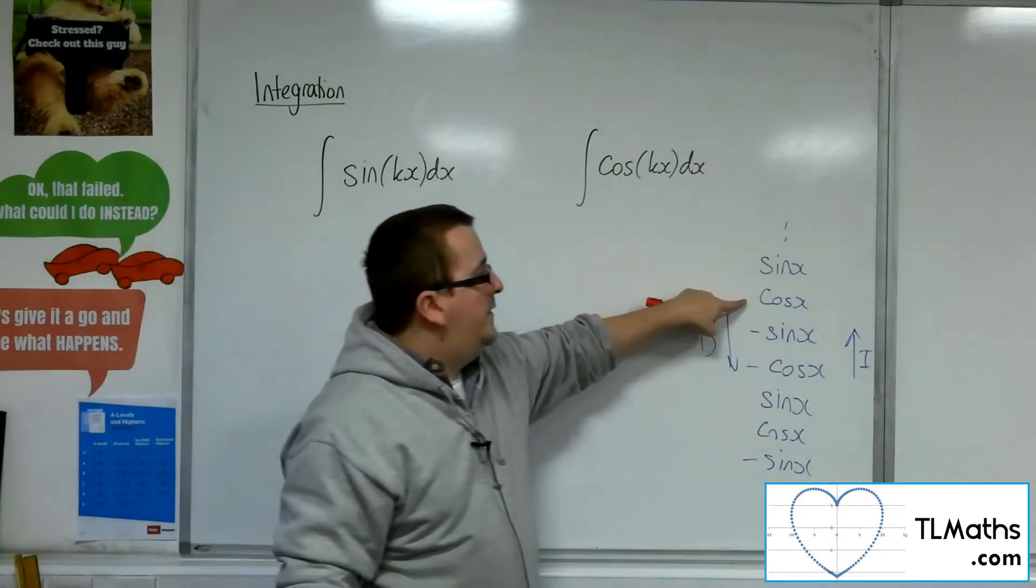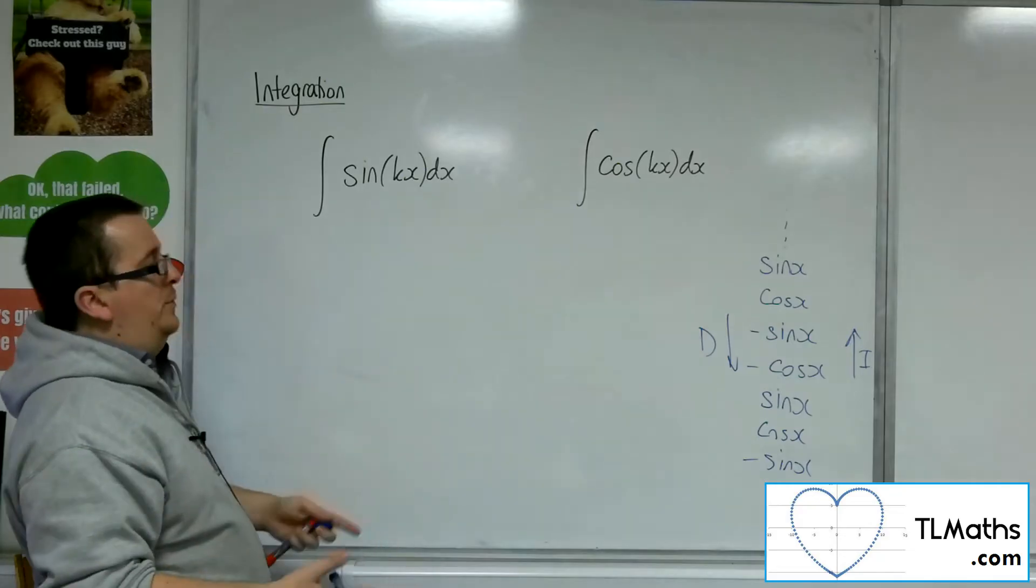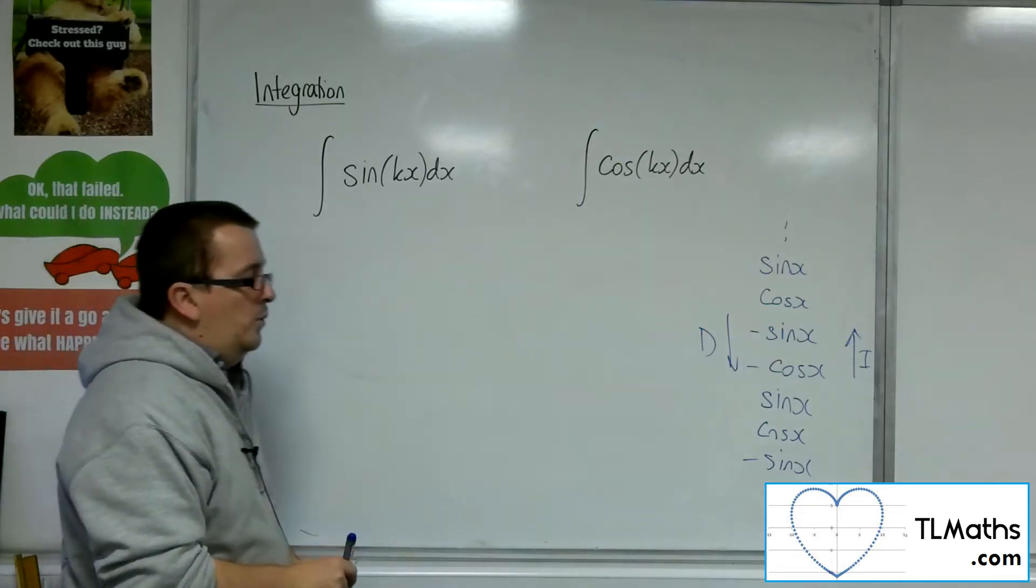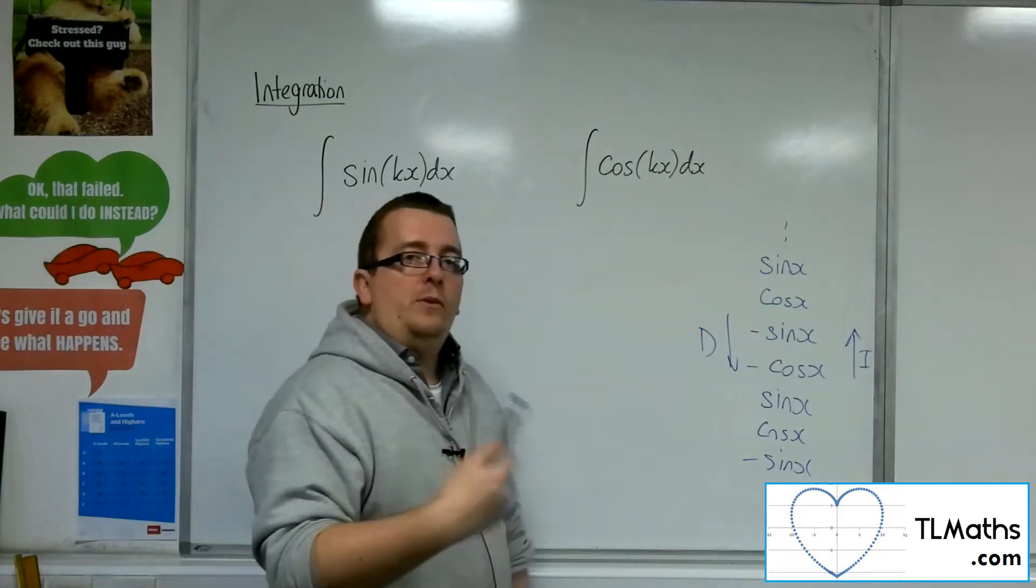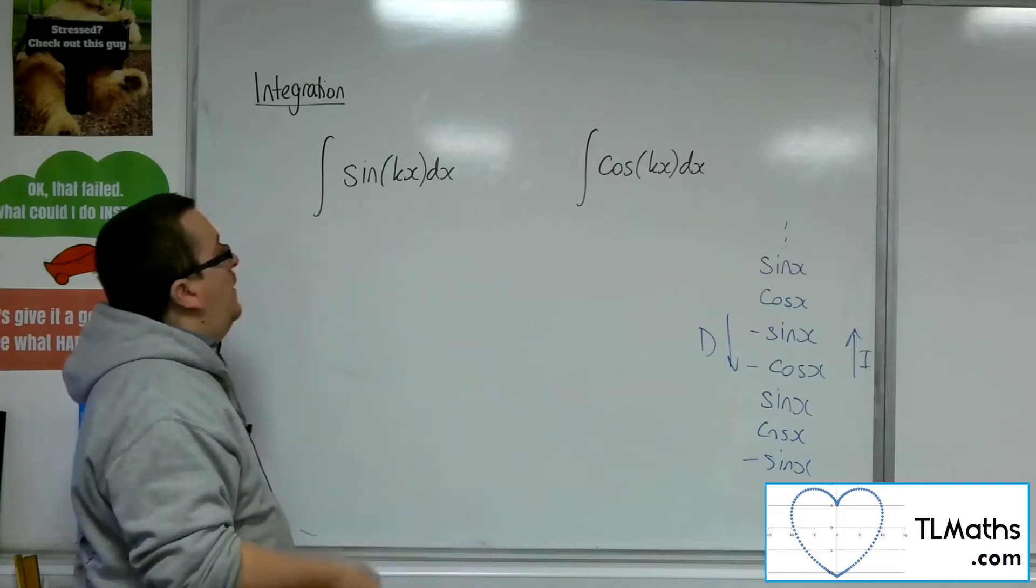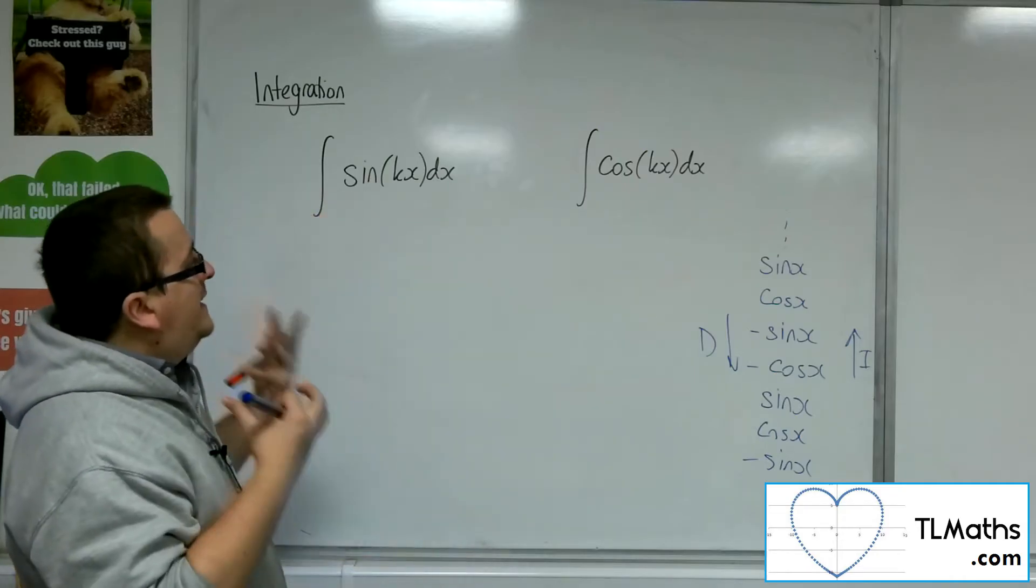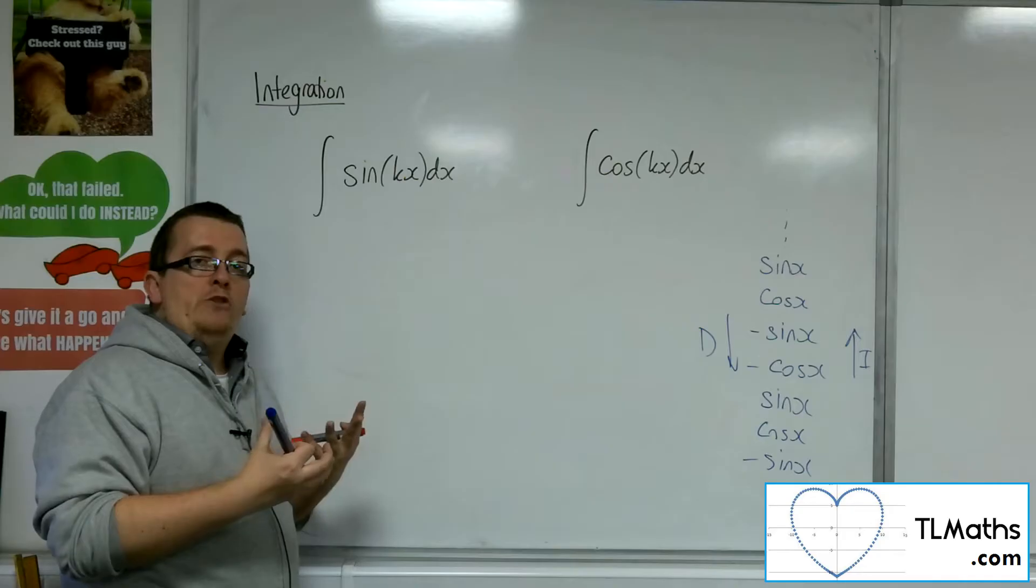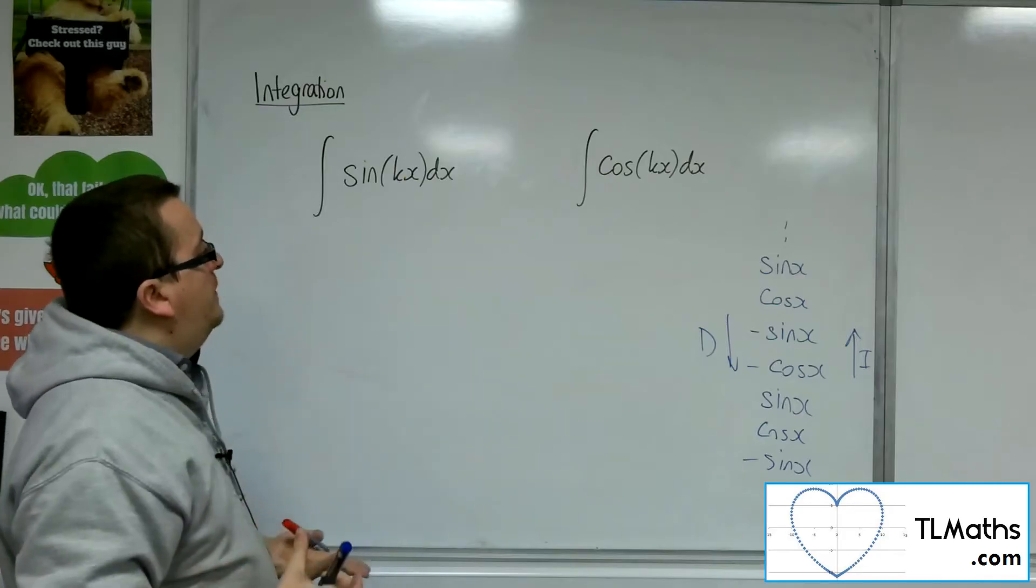So cosine of x will integrate to sine x, for example. That reduces the problem now to figuring out how I deal with that k that is the multiplier of x, the coefficient of the x in there.